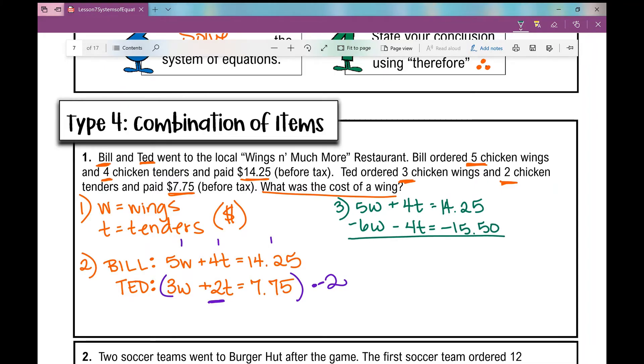My T's, the T gets eliminated and I'm left with negative 1W equals 14.25 minus 15.50 is negative 1.25. If I divide both sides by negative 1, I get $1.25. And the question asks, what was the cost of one wing? I don't need to do anything further because I found the cost of one wing. So therefore, the cost of a wing was $1.25.